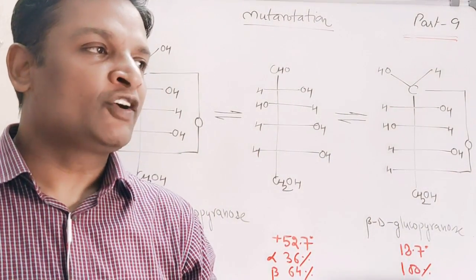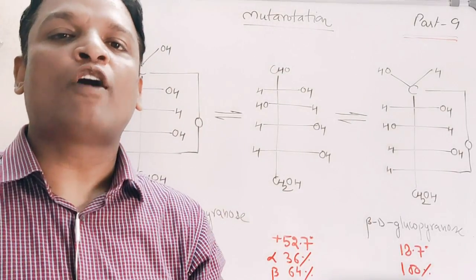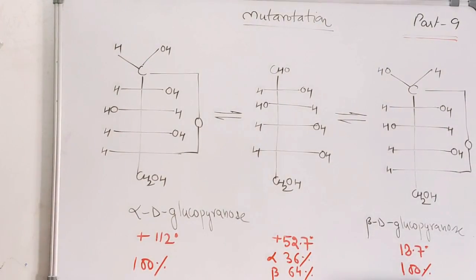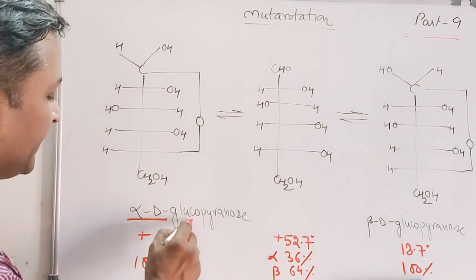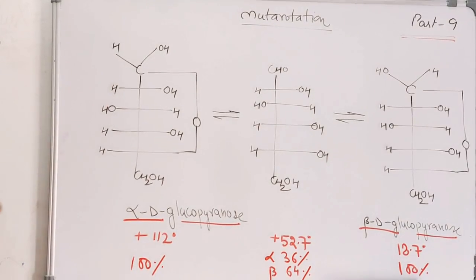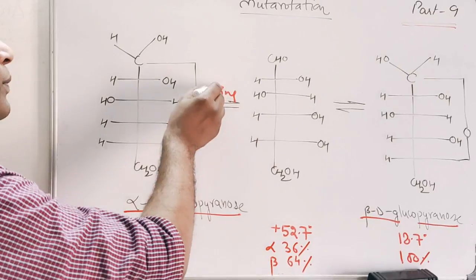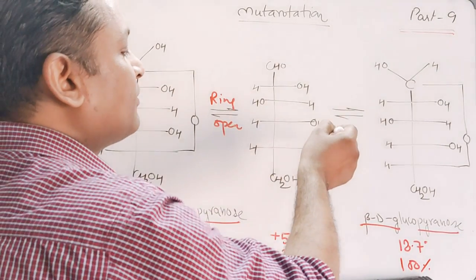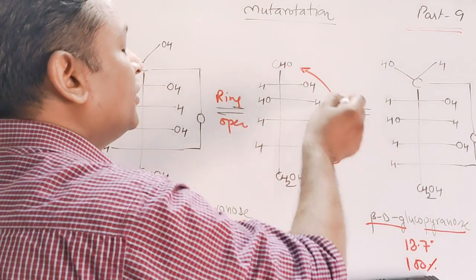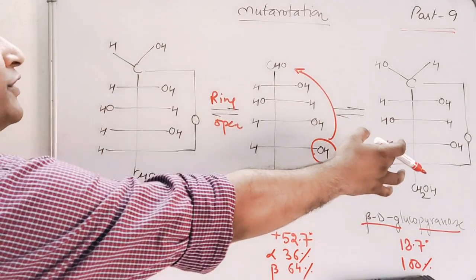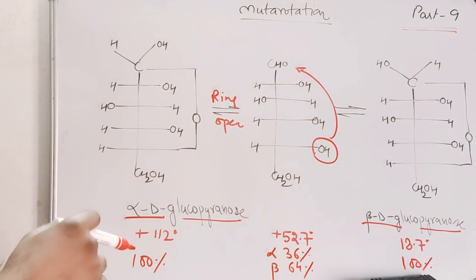The meaning of 'muta' is change — it means there is a change in specific rotation. Let's see how this phenomenon occurs. In alpha-D-glucopyranose, the ring opens into an open chain form, and the open chain can then close back into the beta form. So from alpha we change to beta, and from beta we change to alpha — this change is called mutarotation.